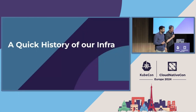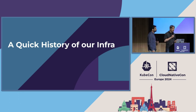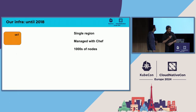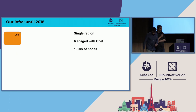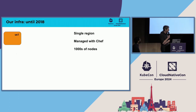Before we dive into the purpose of the talk, which is service discovery, to give you context and the constraints we have, we're going to present a quick history of our infrastructure. So back in 2018, Datadog was running in a single region on AWS and everything was managed with Chef and Capistrano. As we were reaching thousands of nodes, this started to be a challenge.